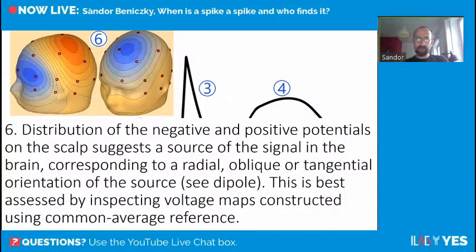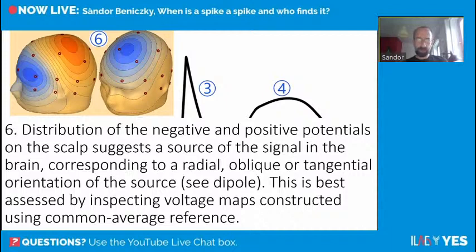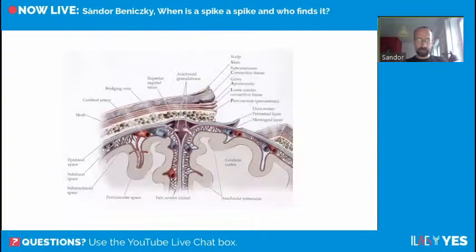Criterion 6 addresses the amplitude or voltage map, which most EEG equipment can display but few people use. It requires a distribution of negative and positive potentials on the scalp suggesting a source in the brain corresponding to a radial, oblique, or tangential orientation of the source. This is best assessed by inspecting voltage maps constructed using common average reference.